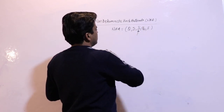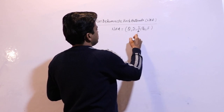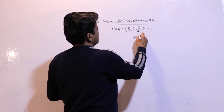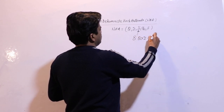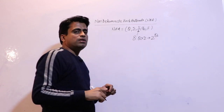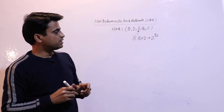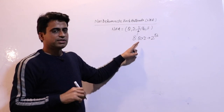But the delta of NFA — Q cross sigma implies 2 to the power Q — this transition function delta is different from DFA.